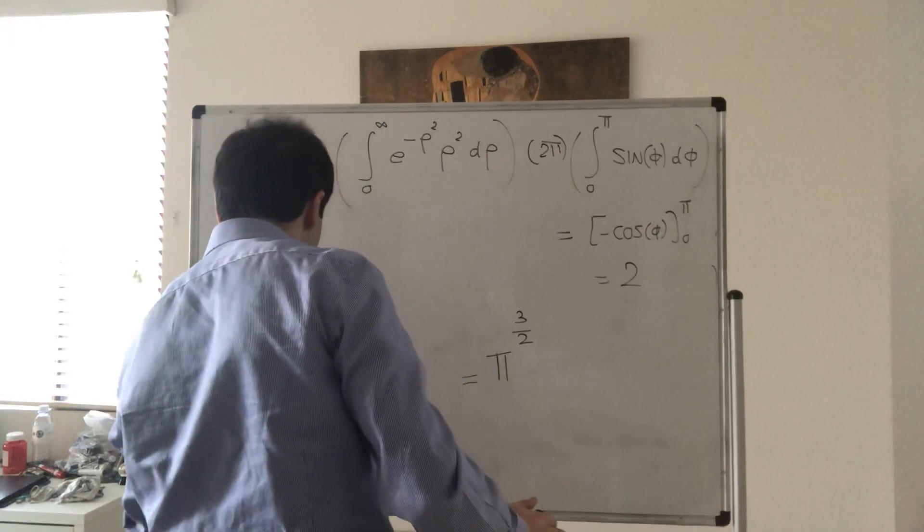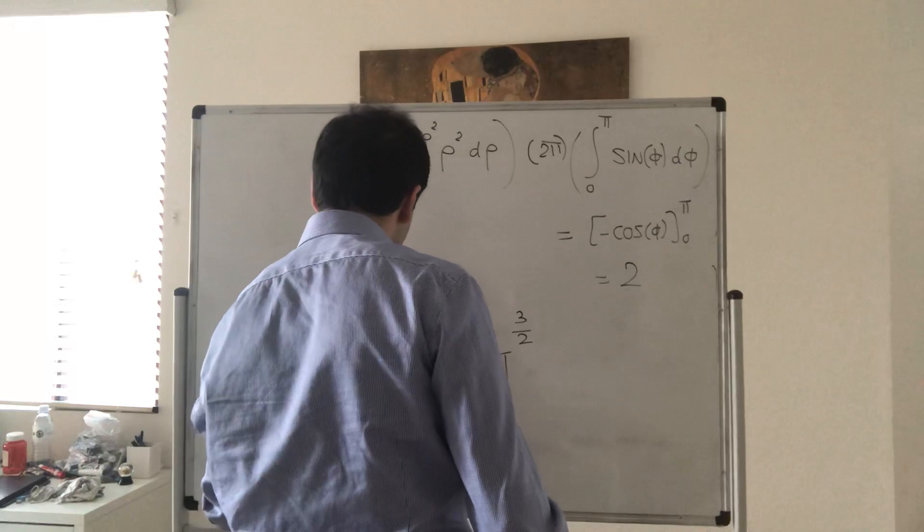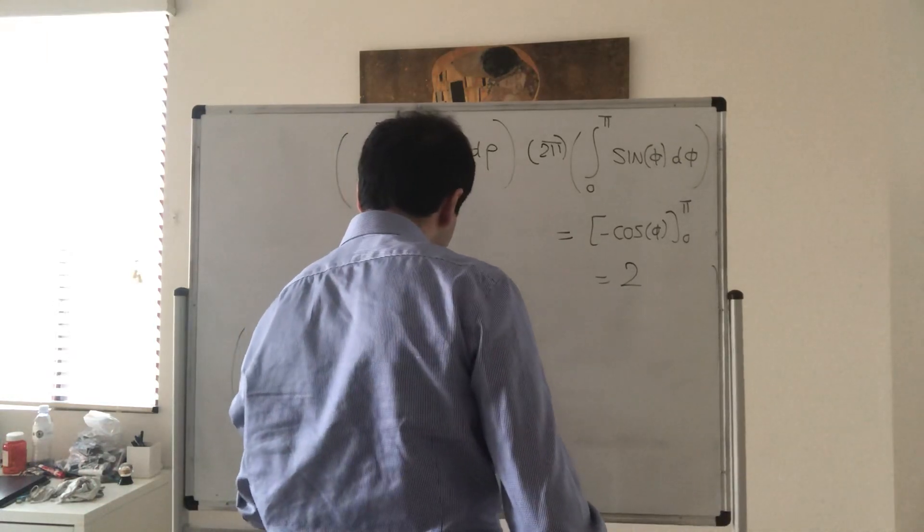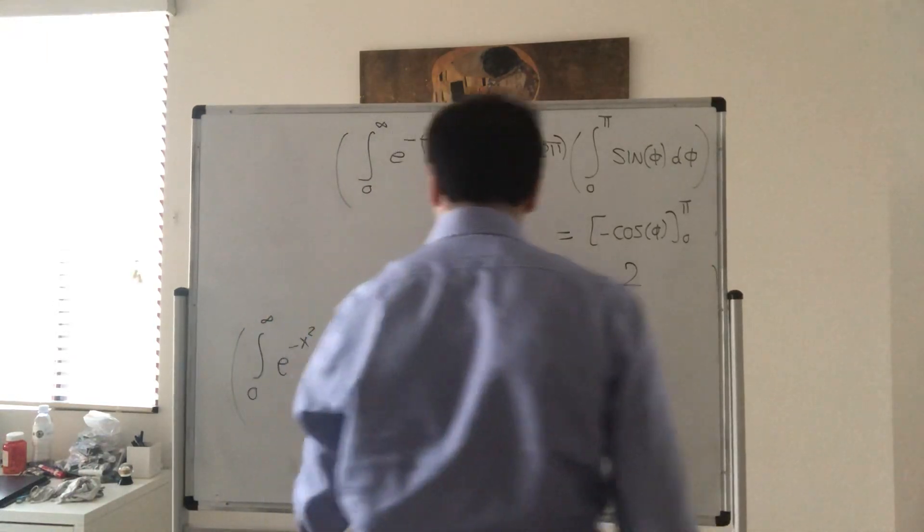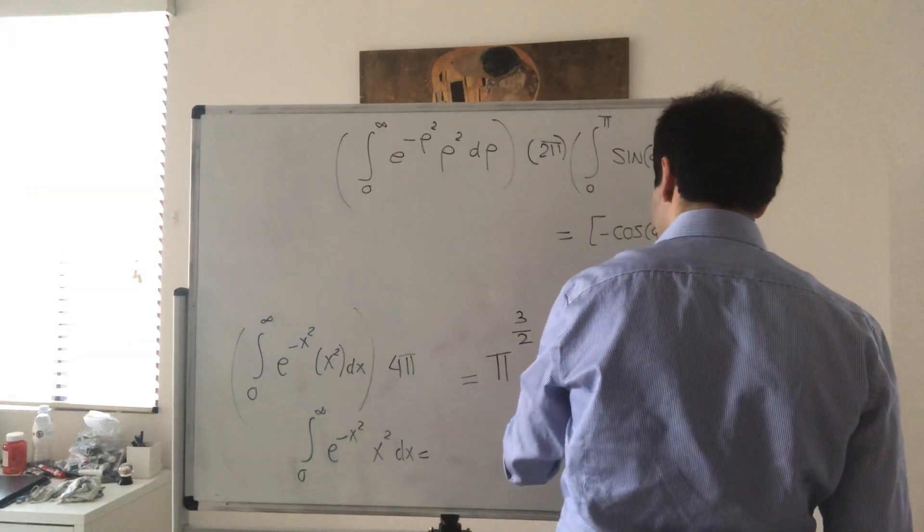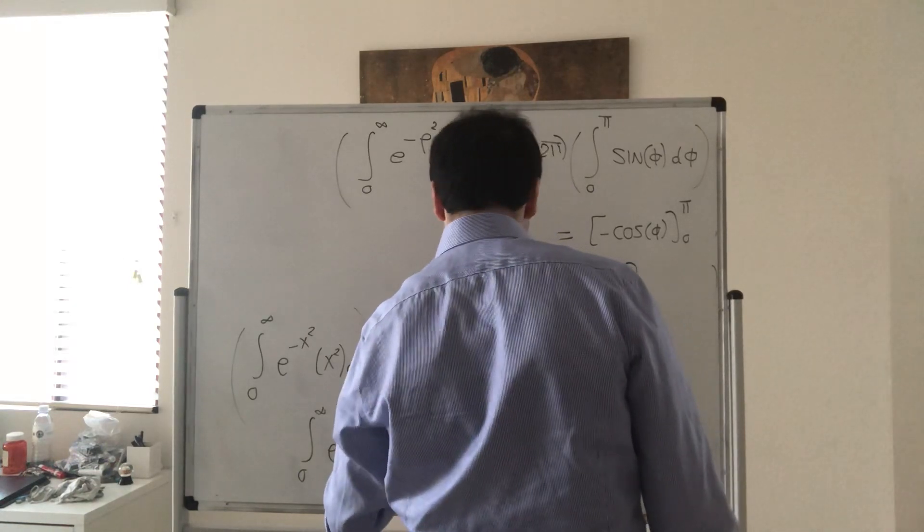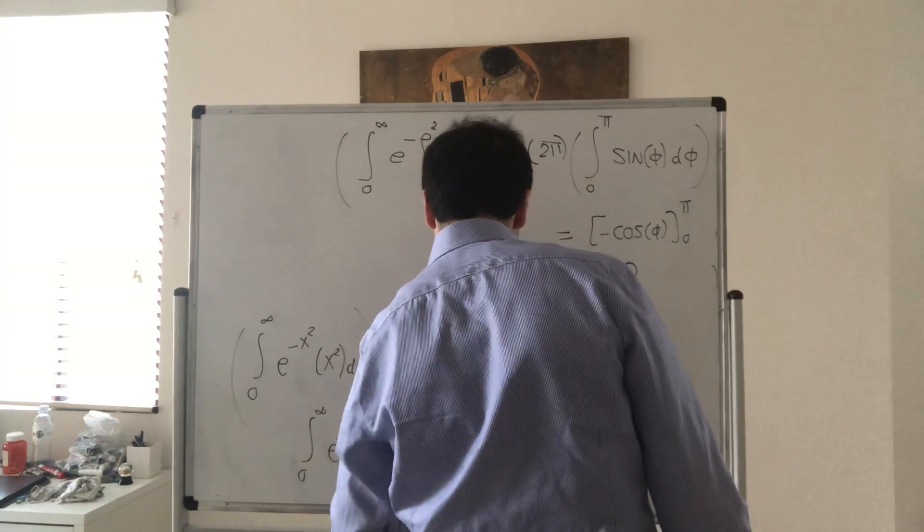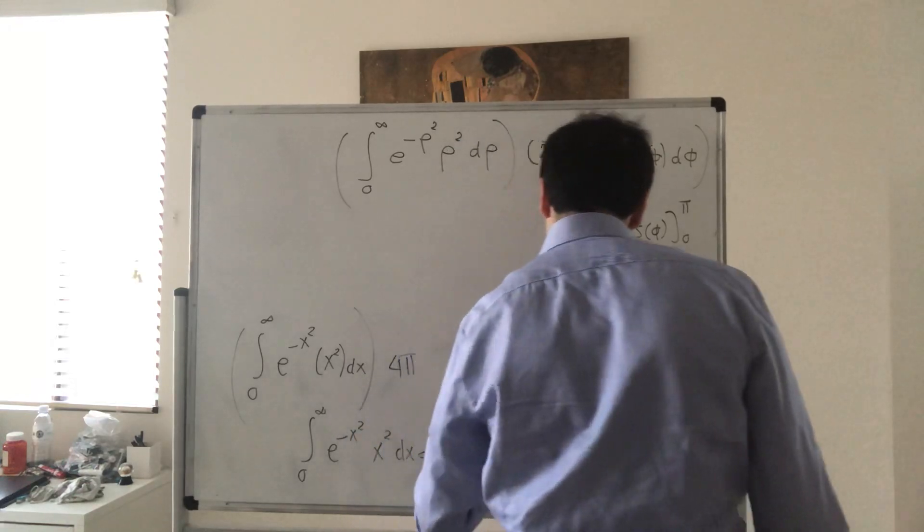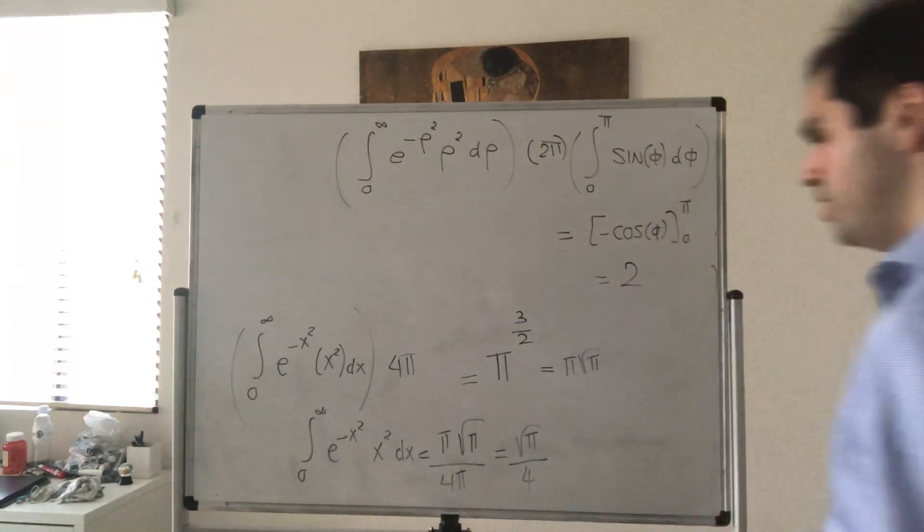So in other words, what we get, the integral from 0 to infinity of e to the minus x squared, x squared dx, becomes nothing other than, again, that's pi times square root of pi, so it's just square root of pi. Again, pi to the 3 halves over 4 pi, so square root of pi over 4.